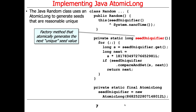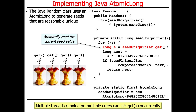The seedUniquifier method is used in the Random default constructor. Let's look at what it does. First, notice it runs in a loop. The first thing it does is get the current value of the seedUniquifier field — which starts out with that big number and changes over time. We could actually have multiple threads running on multiple cores all simultaneously calling get. There's nothing that stops that from happening, so we have to be prepared for it. The value is stored in a local variable called s.